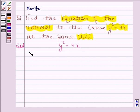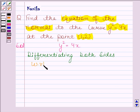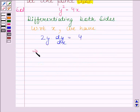Differentiating both sides of this equation with respect to x, we get 2y times dy/dx equals 4. This implies dy/dx is equal to 4 divided by 2y.